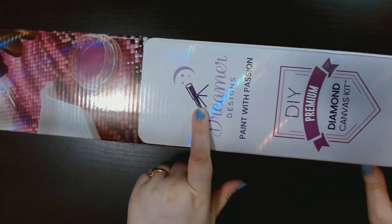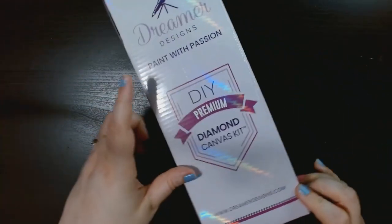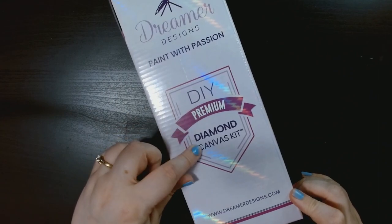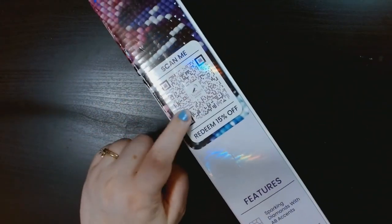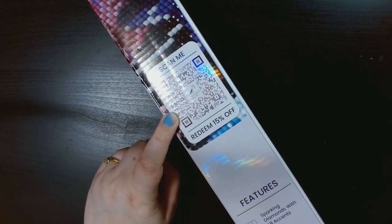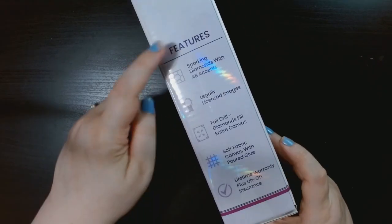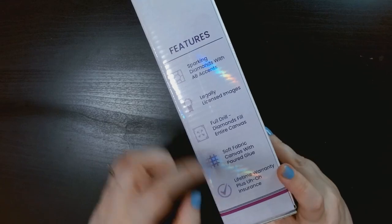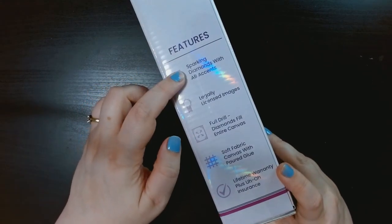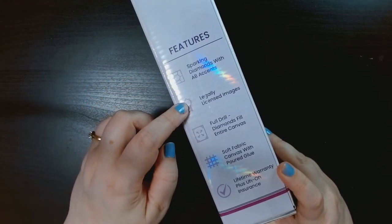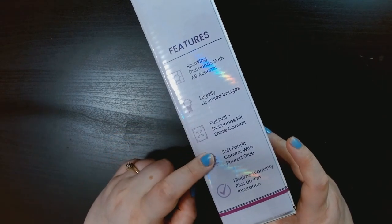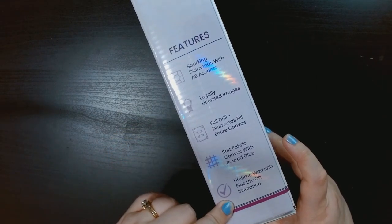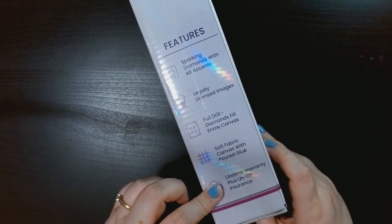As you can see, it's a Dreamer Designs DIY premium diamond canvas kit. There's a scan thing here for 15% off. We got the features: sparkling diamonds with AB accents, legal licensed images, full drill, soft canvas with poured glue, and then lifetime warranty plus uh-oh insurance.